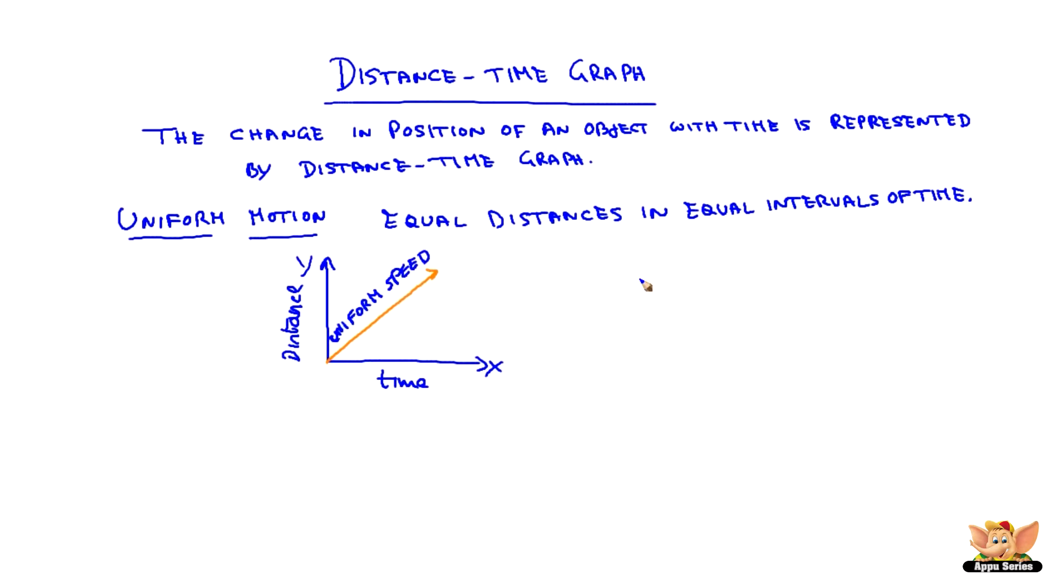Now how do we calculate the speed from this graph? Let us see a distance-time graph for an object traveling with uniform speed. Time is t, distance is s. Since it is traveling at uniform speed, it is a straight line.